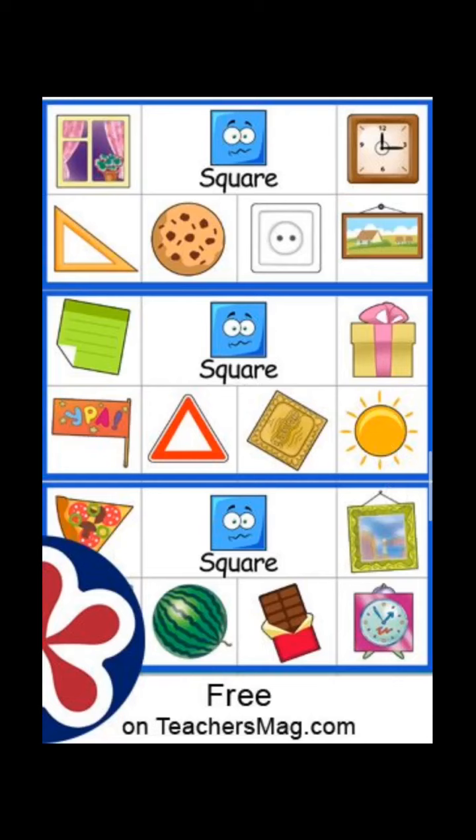What we have to do today — we have to find out the circle, square, and triangle shape objects out of the different types of objects.